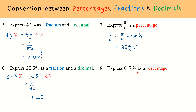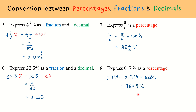Finally, if I want to express 0.769, which is a decimal value, as a percentage: similar to the previous question, I will multiply this value by 100%, but in my calculator I just multiply by 100. I maintain the percentage sign, so my answer will be 76.9 percent.